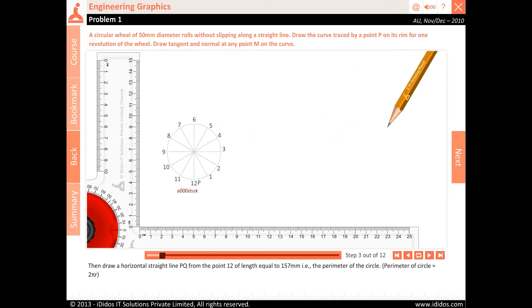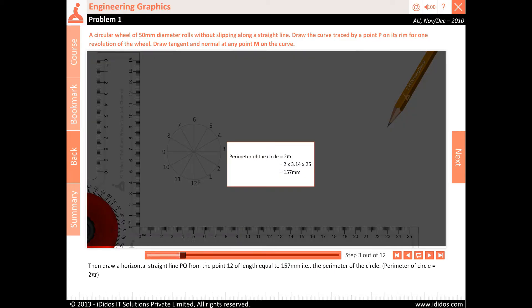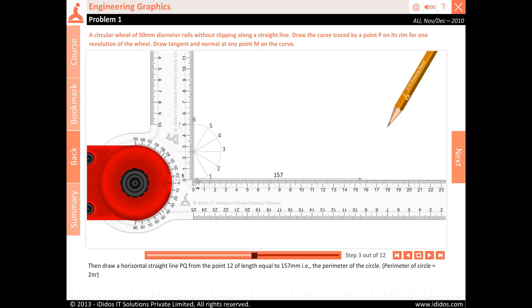Then draw a horizontal straight line PQ from point 12 of length equal to 157 mm, which is the perimeter of the circle. Perimeter of circle is equal to 2πr.